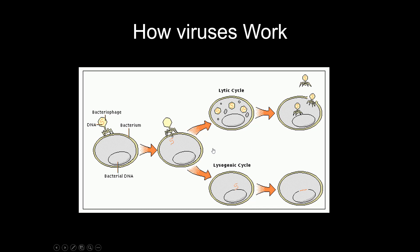From there, two options can happen. The virus can directly hijack the cell and trick it into making lots of little viruses until the cell pops and releases them — that's a lytic cycle, also called a productive infection because the host cell is producing lots of virions. Alternatively, the viral DNA can get incorporated into the host genome, hiding and waiting for conditions to be right for the infection to take place.